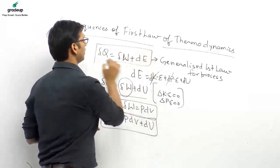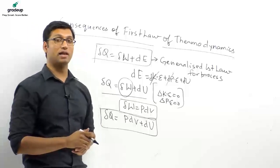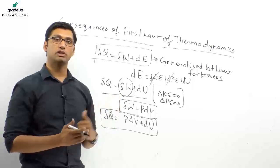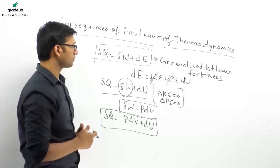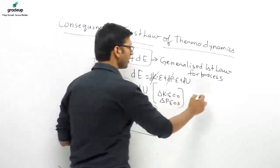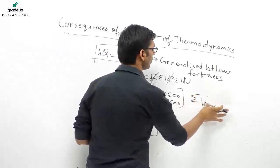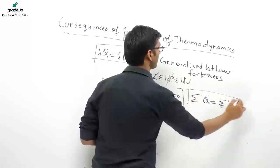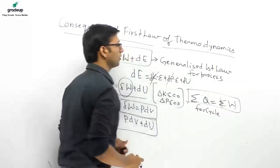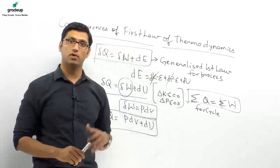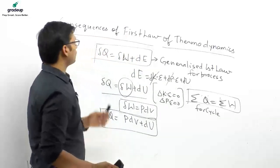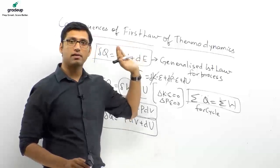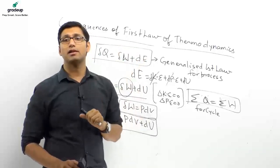For today, these are the important equations from the first law of thermodynamics. For a cycle: net heat interaction equals net work interaction. For a process: δQ = δW + dE. These are very important and you should never forget them.